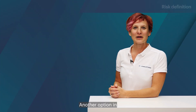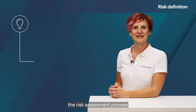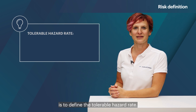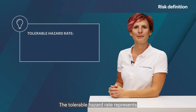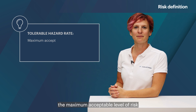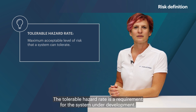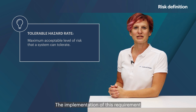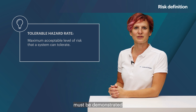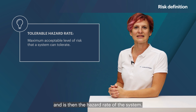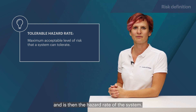Another option in the risk assessment process is to define the tolerable hazard rate. The tolerable hazard rate represents the maximum acceptable level of risk that the system can tolerate. It is a requirement for the system under development, and the implementation of this requirement must be demonstrated — this is then the hazard rate of the system.